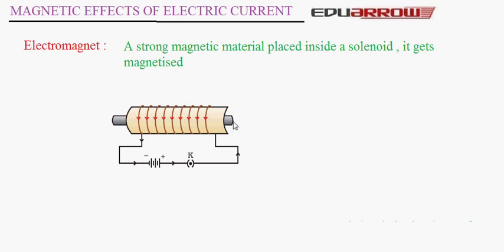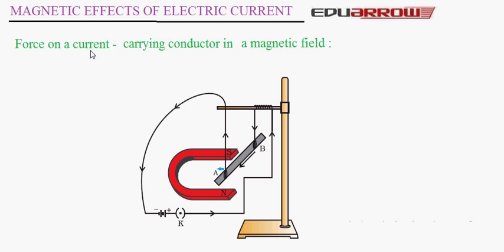Now let us discuss the force on a current-carrying conductor in a magnetic field. When a current is passed through a conductor, it produces a magnetic field, and this magnetic field exerts a force on a magnet placed in the vicinity of the conductor. By Newton's third law, the magnet must also exert a force on the current-carrying conductor. When a current-carrying conductor exerts a force on the magnet, the magnet also exerts an equal and opposite force on the conductor. If the direction of current is reversed, the force that the magnet exerts on the conductor is also reversed.